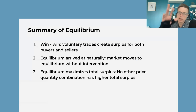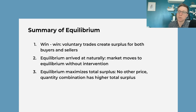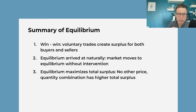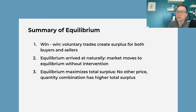To summarize why we like the equilibrium: it's a voluntary transaction, so both producers and consumers are better off. The market gets there naturally, and no other price-quantity combination will give us a higher total surplus.